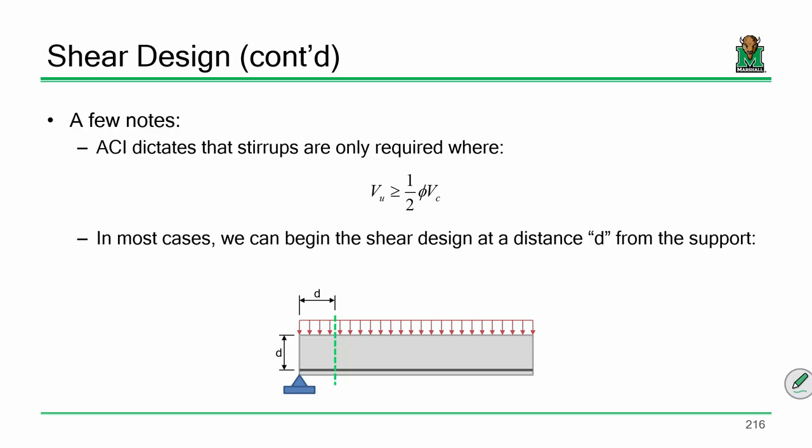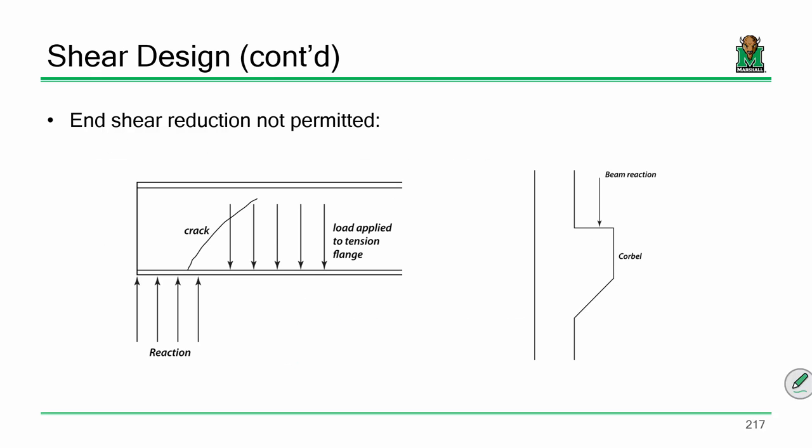In most cases, you're allowed to begin your design at what we call VU star, which is the shear backed off D away from the support to eliminate concentrated stress effects, allowing stress to propagate throughout the section. There are some cases where we can't, for instance if you're applying load directly to the tension flange or looking at a corbel in a reinforced concrete column. Good examples are in the Marshall University parking garage next to the biotech center.